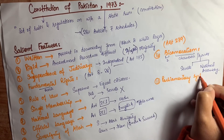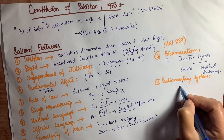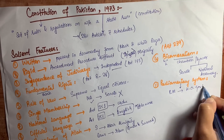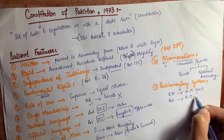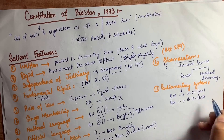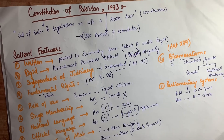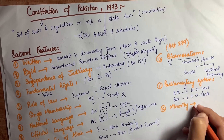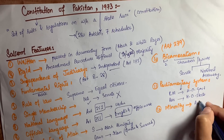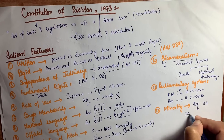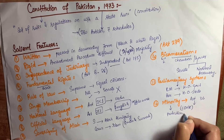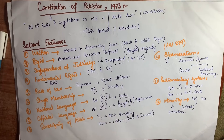The next feature is parliamentary system. In Pakistan there is a parliamentary form of government, meaning the Prime Minister is the head of government while the President is the head of state. Next is minority rights — according to Article 36 of the Constitution of Pakistan, minorities are given protection and their rights should be protected. That is all about the constitution.